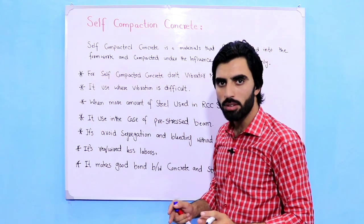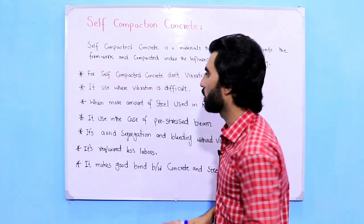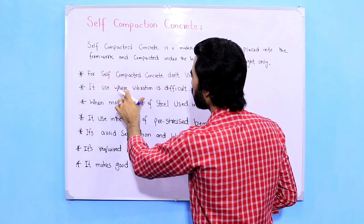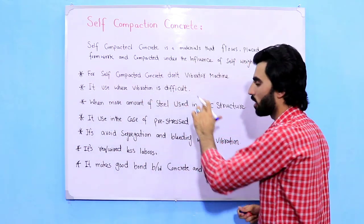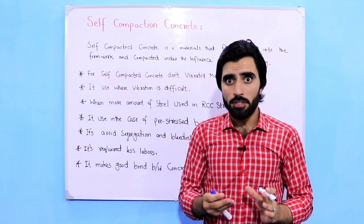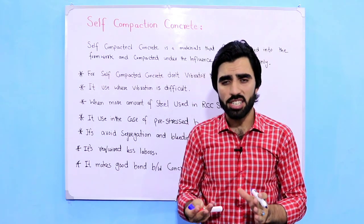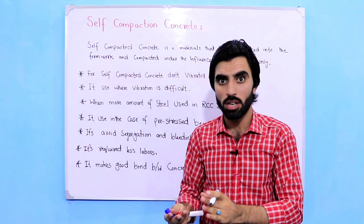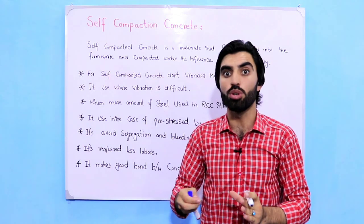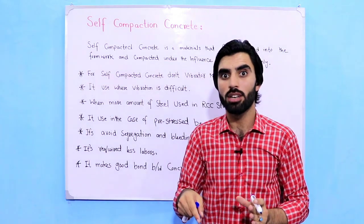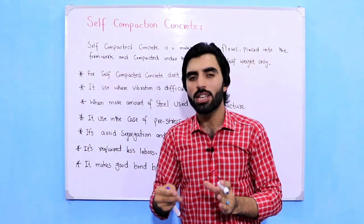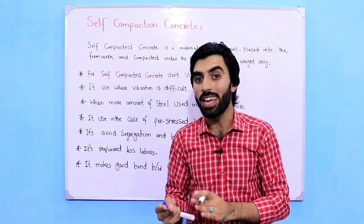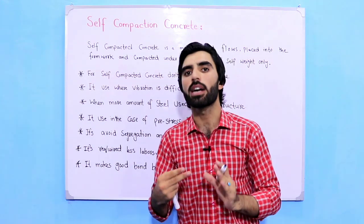The second importance is that self-compacting concrete is used where vibration is difficult. If in any RCC structure we are not able to use a vibrating machine, or if it is difficult to use one, then we use self-compacting concrete there, because no vibrating machine is needed for compaction.